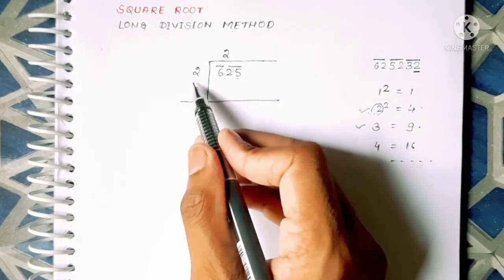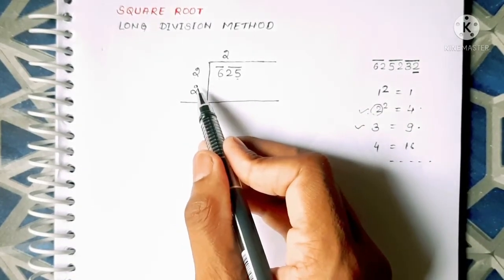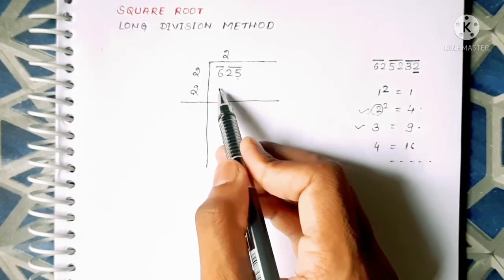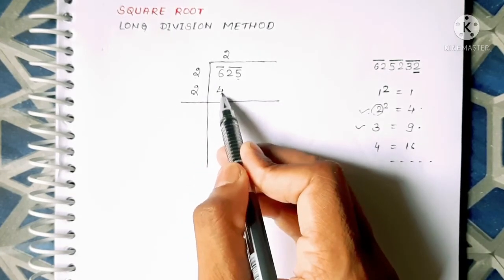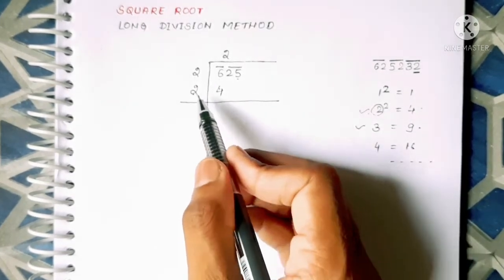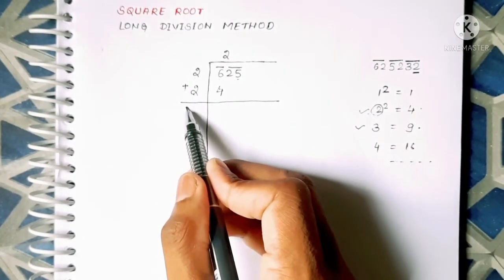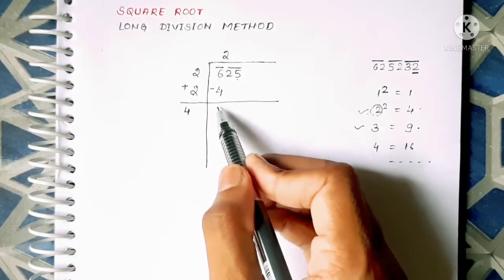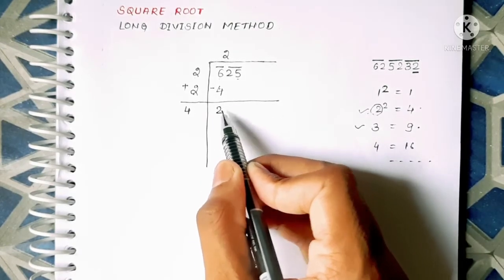And we will have to write this number 2, and we will multiply this number and write the number here. So 2 into 2 is 4. Then what we will have to do is to add this number and write the number here and we will subtract this as we do in division. 6 minus 4 is 2.